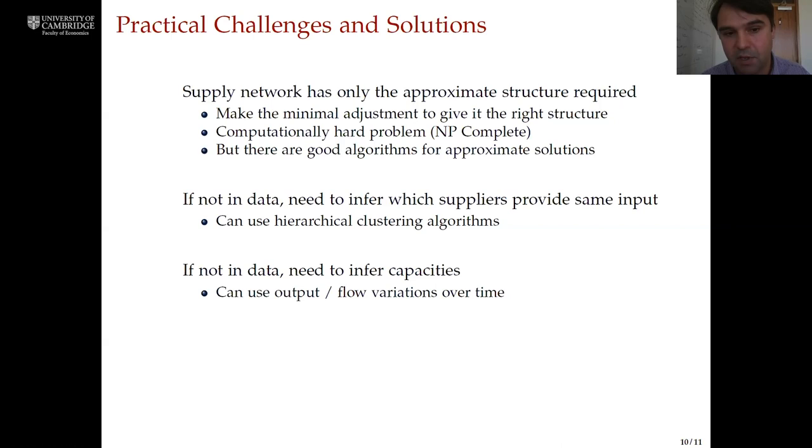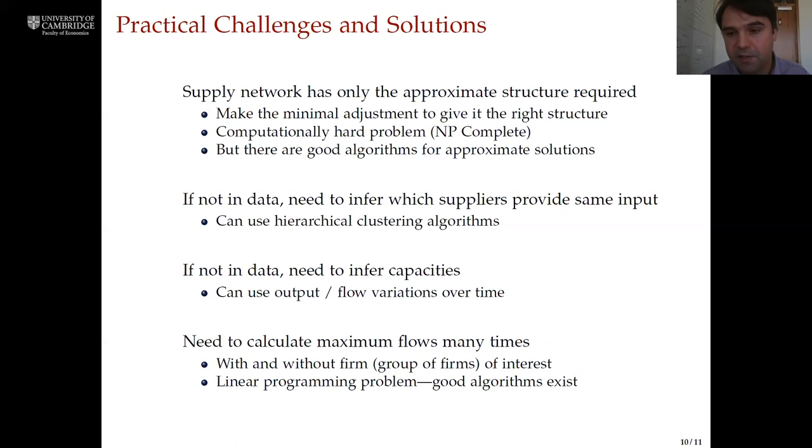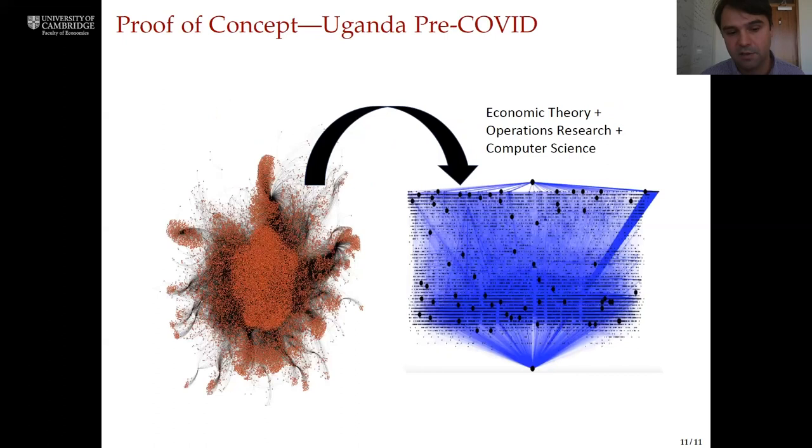Another piece of data that we need and may not have is the capacities of different firms. We can get a crude approximation of this though by just looking at the output of different firms over time. The final thing to mention is that if we want to run lots of different counterfactuals, we want to think systematically about whether each firm is critical to a given objective or not, we'll have to calculate these maximum flows many, many times. But because calculating the maximum flow is just a linear programming problem and we have good efficient algorithms for doing that, the whole problem is scalable. And so we can do this at an economy-wide level.